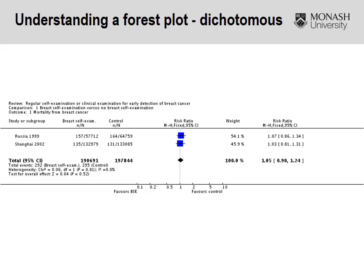The next slides focus on how to interpret a meta-analysis, or forest plot. This example looks at self-examination or clinical examination for the early detection of breast cancer. The comparison is self-exam versus no exam, and the outcome of interest is mortality from breast cancer. We have two studies, each with an intervention group and a control group, along with the number of participants who had the outcome — for example, 157 out of 57,712 in the intervention group and 164 out of 64,759 in the control group.